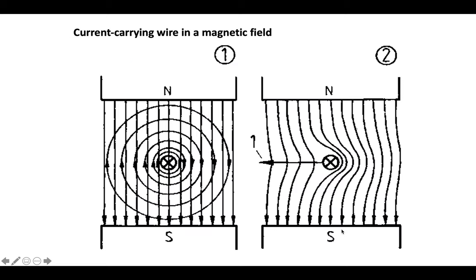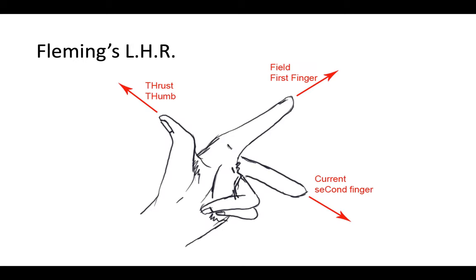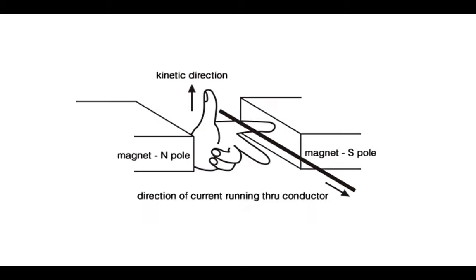To determine the direction of that force, we use Fleming's left-hand rule. Stick your left hand out and make your thumb, first finger, and second finger perpendicular to each other. The thumb represents the force on the wire, the first finger represents the direction of the magnetic field, and the second finger represents the direction of conventional current - not the direction any particular charge carriers are going, but the assumed positive charge carriers. So if you align your second finger with the direction of current and your first finger with the direction of the field, your thumb gives you the direction of thrust.